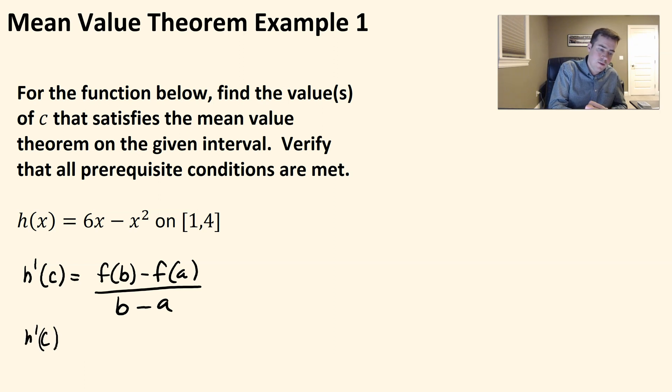So we're saying h'(c) is going to equal f(b). So it's going to be f(4) - f(1) over 4 - 1. Let's go ahead and figure out what that would be.